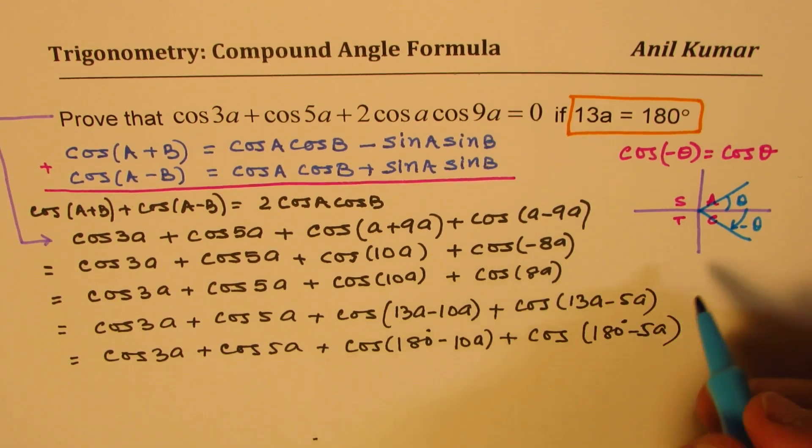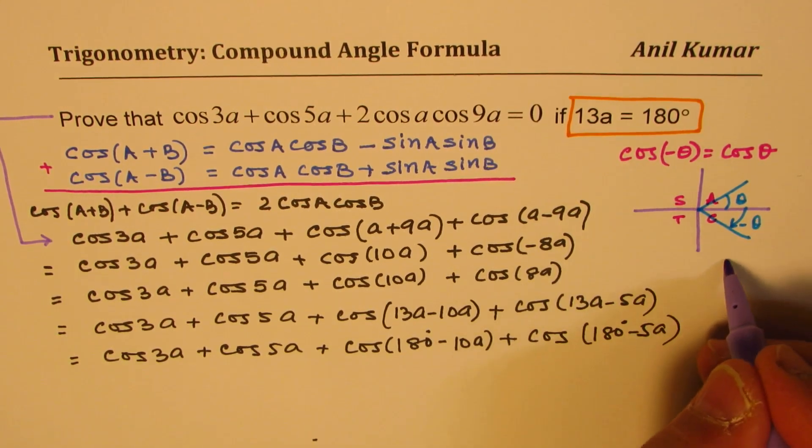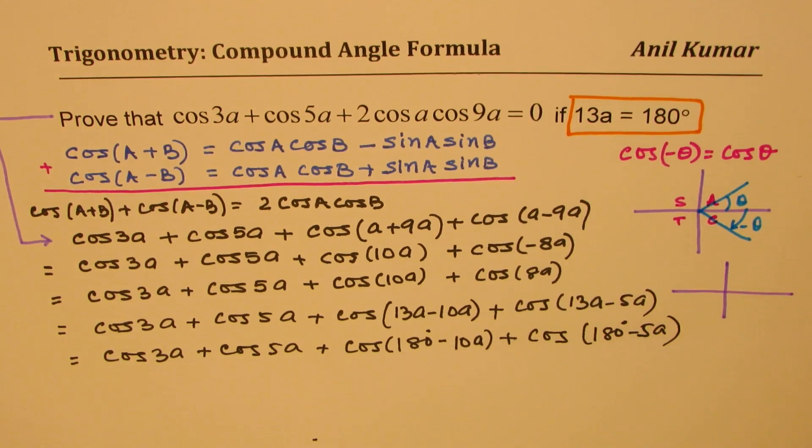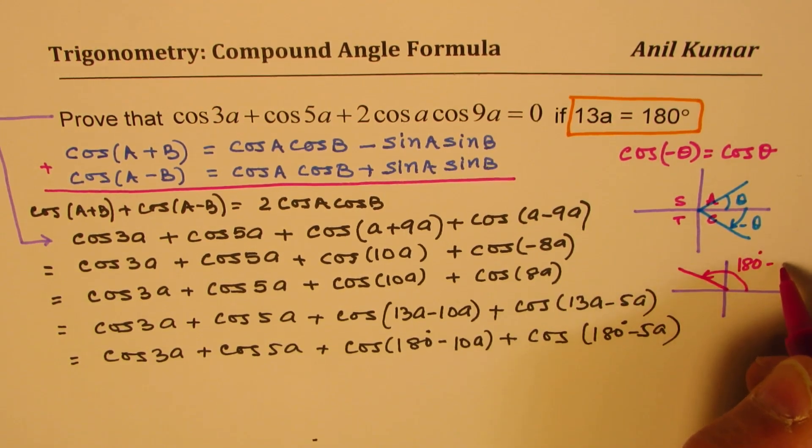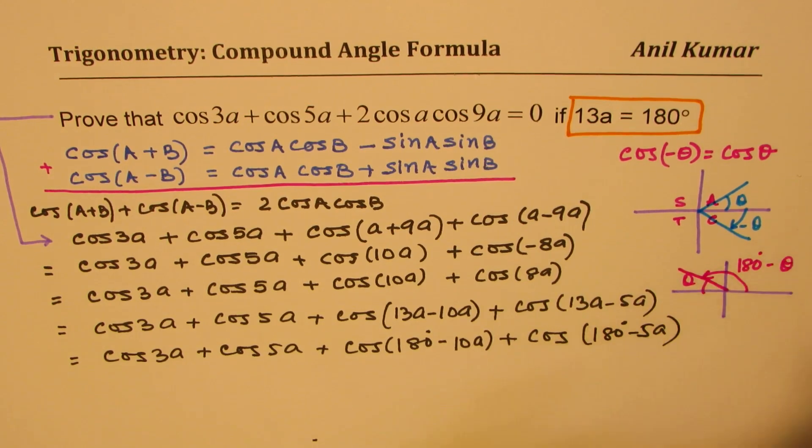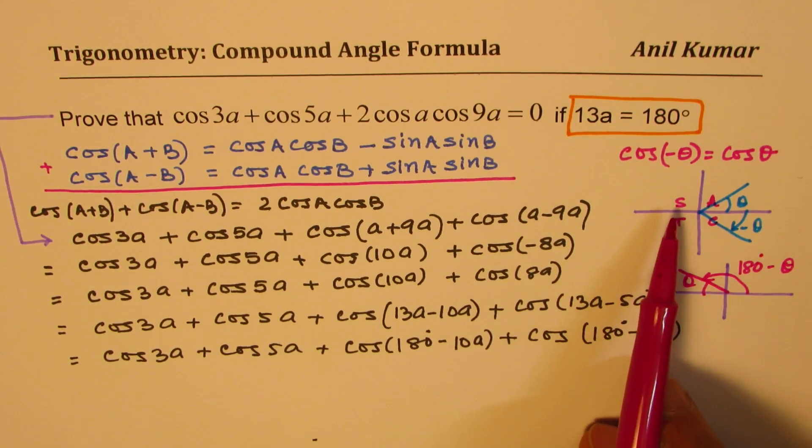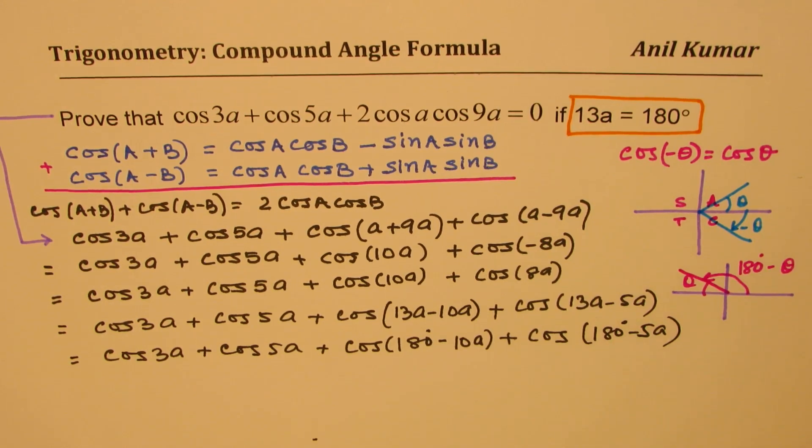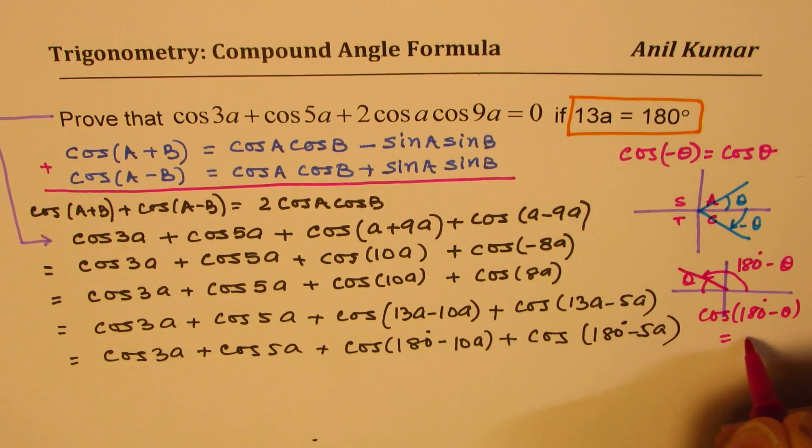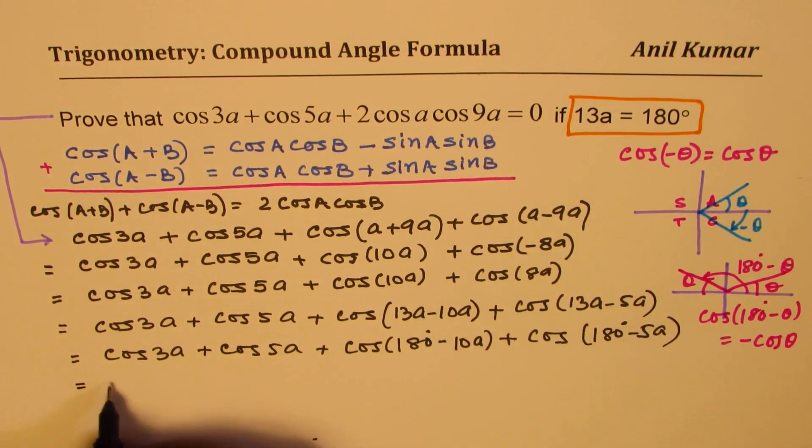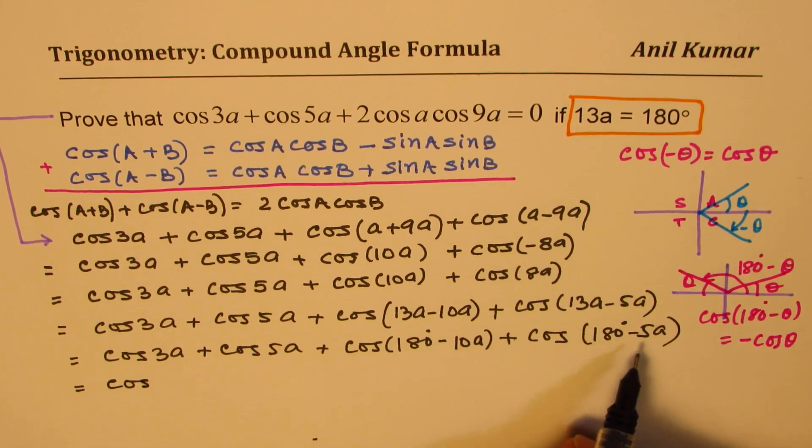Now what does that remind you of, 180 degrees minus theta. So in cosine function if we are talking about this angle which is 180 degrees minus theta where theta is this angle, in this quadrant cos is negative. So basically cos of 180 degrees minus theta is equal to minus cos theta. It is negative of this value. So these two terms can now be rewritten as negative of these angles.